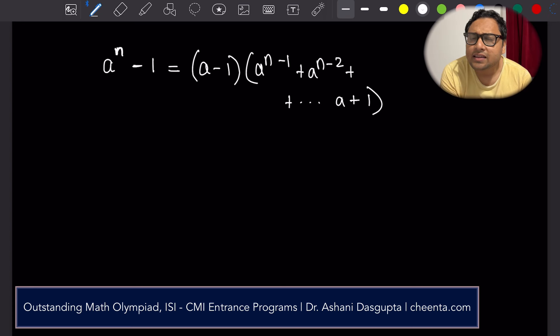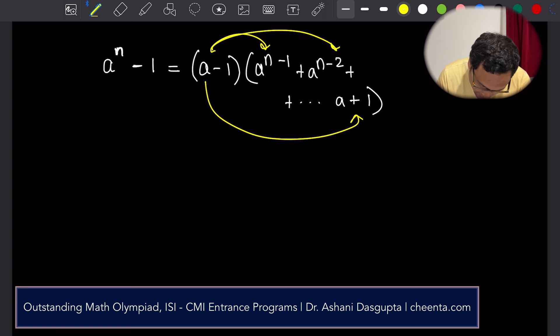And you can easily check that this is true by simply multiplying the things out. If you multiply a with all of these terms, you will see you will have a to the power n, a to the power n minus 1, up to a squared plus a.